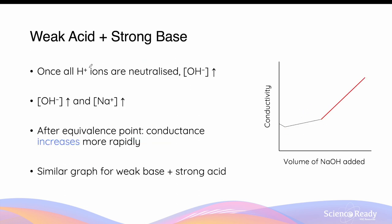Once all the hydrogen ions from the weak acid have been neutralized by the hydroxide, we reach the equivalence point. After the equivalence point, any further addition of sodium hydroxide increases the hydroxide and sodium ion concentrations, resulting in a much faster rate of conductivity increase — because hydroxide ions, being the more conductive ion, are now increasing in concentration. The equivalence point of a weak acid and strong base titration is identified by the change in the rate of increase in conductivity on the graph.